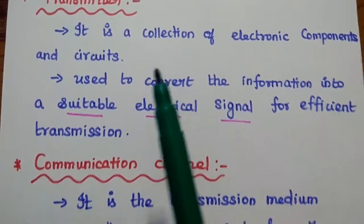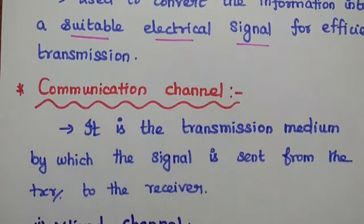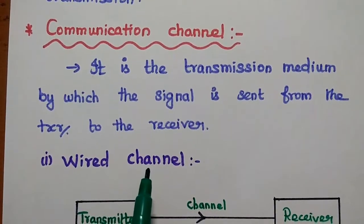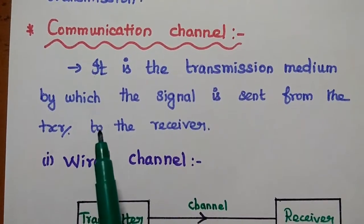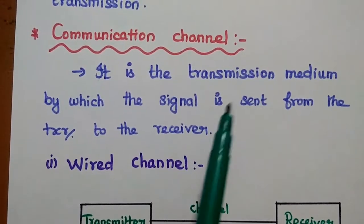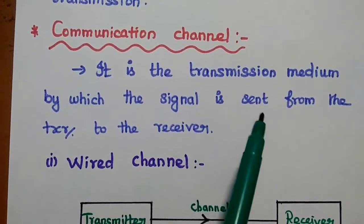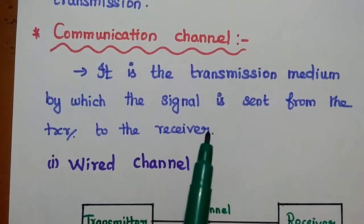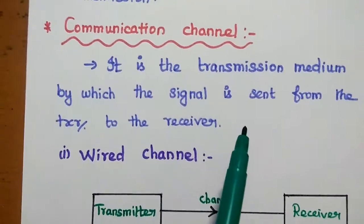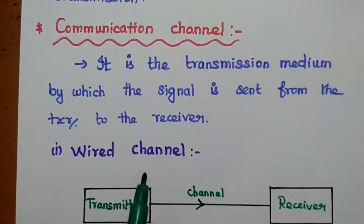After converting the message signal into a suitable form, we have the communication channel. The communication channel is the transmission medium by which the signal is sent from the transmitter to the receiver. Depending on the type of communication channel, we can have two types of communication.